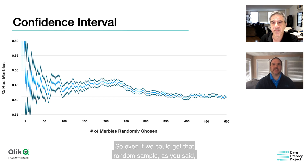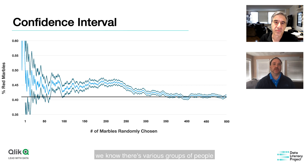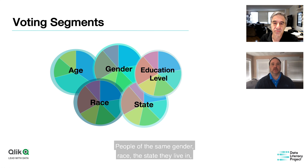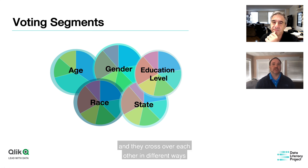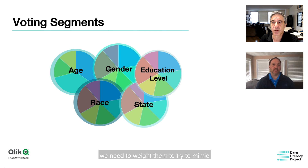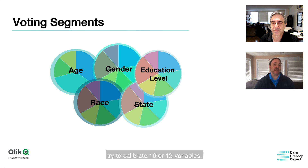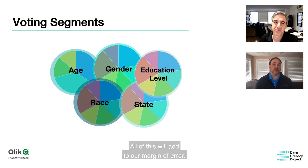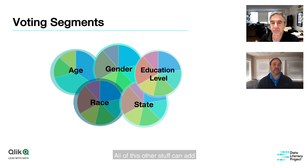Even if we could get a random sample, we know various groups of people tend to vote similarly — by gender, race, state, education level, and age. To ensure high enough sample and confidence levels for each group, we need to weight them to mimic the national population. Polls like those from Gallup and Pew try to calibrate 10 or 12 variables, which is incredibly hard. All of this adds to our margin of error — the statistical plus or minus 3% plus another roughly 2% from sampling issues, totaling about five percentage points either way.